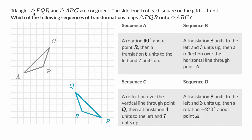We're told that triangle PQR and triangle ABC are congruent. The side length of each square on the grid is one unit, so each of these is one unit. Which of the following sequences of transformations maps triangle PQR onto triangle ABC? We have four different sequences of transformations. Pause this video and figure out which of these actually does map triangle PQR onto ABC — it could be more than one of these.